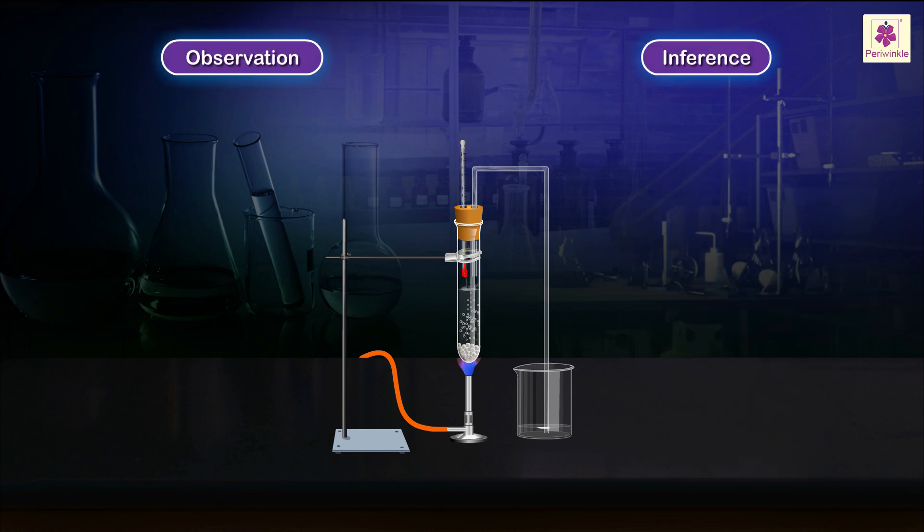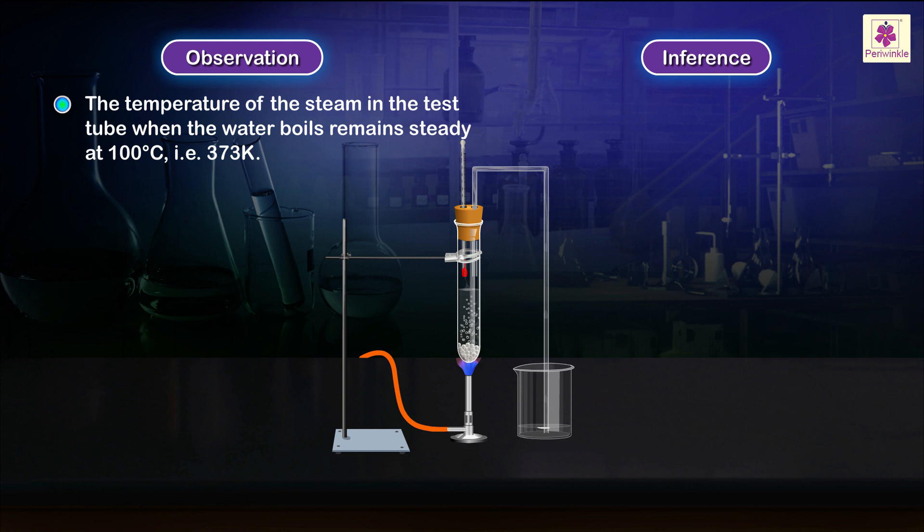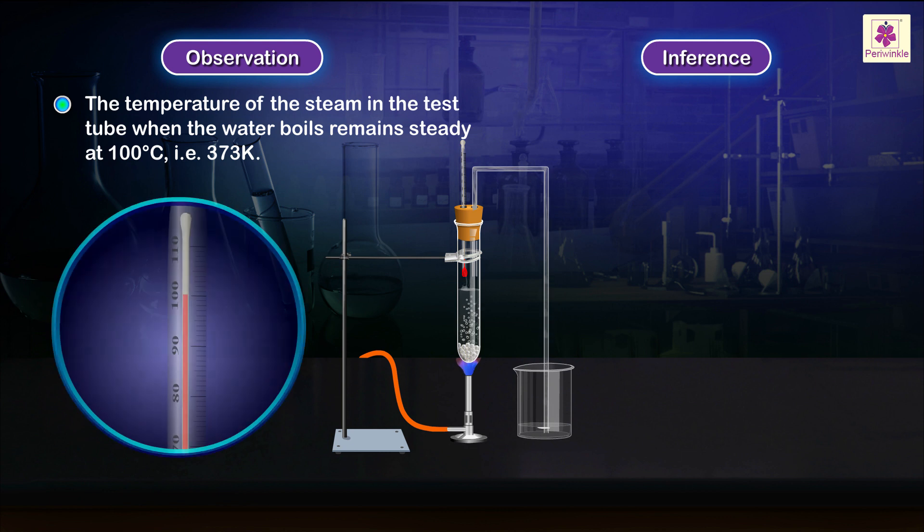Observation and inference. The temperature of the steam in the test tube when the water boils remains steady at 100 degrees Celsius, that is 373 Kelvin.